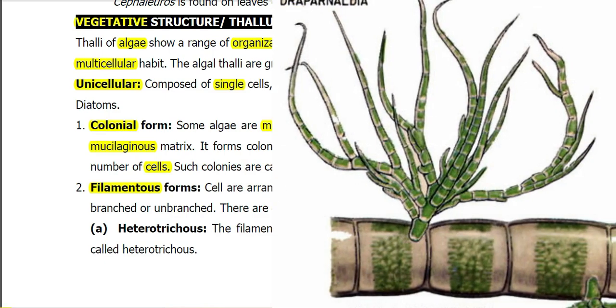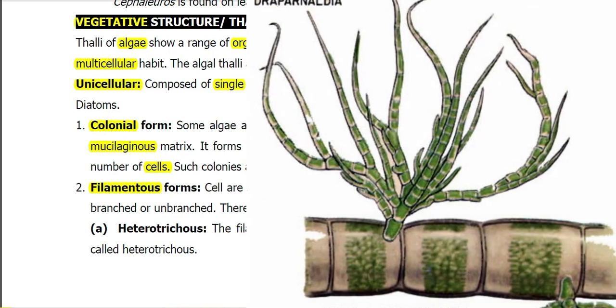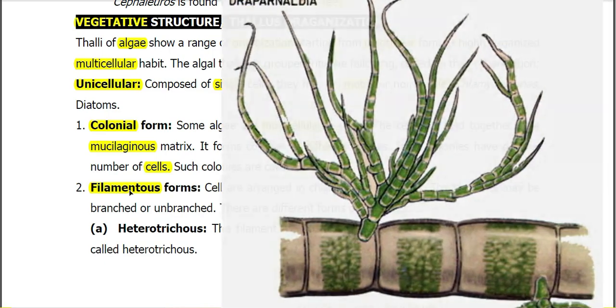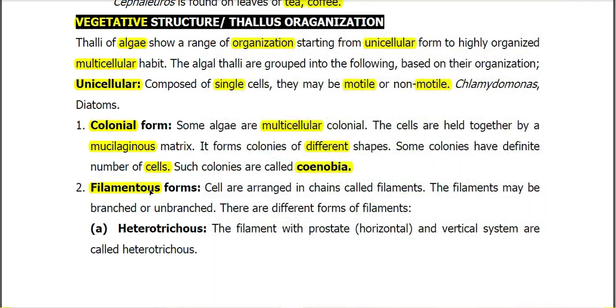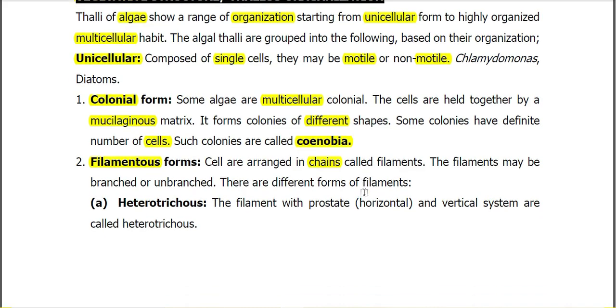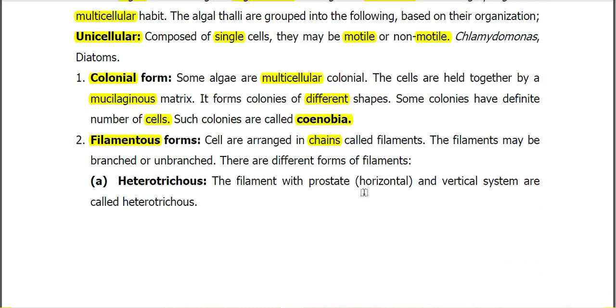As far as filamentous forms are concerned, if cells are arranged in chains, they are called filaments. The filaments may be branched or unbranched.